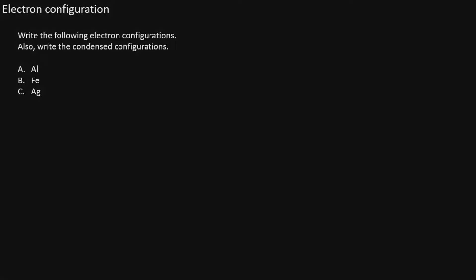In this lesson, we'll go over how to write an electron configuration. We'll begin with aluminum.